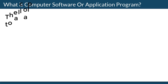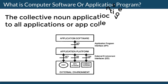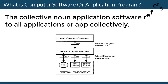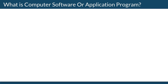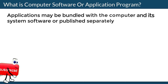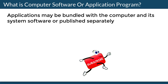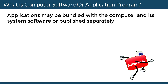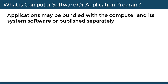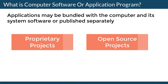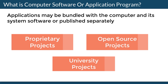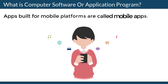The collective noun Application Software refers to all applications or apps collectively. Applications may be bundled with a computer and its system software or published separately, and may be coded as proprietary, open source, or university projects. Apps built for mobile platforms are called mobile apps.